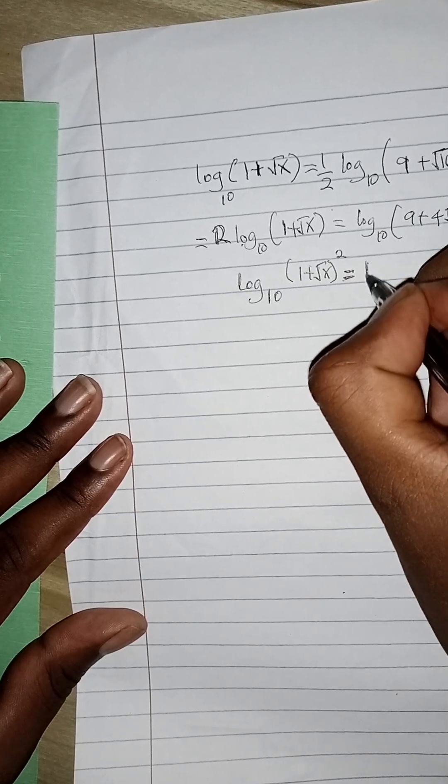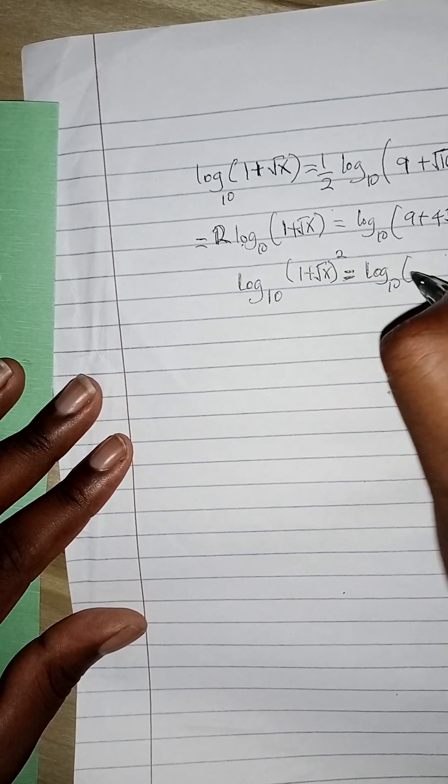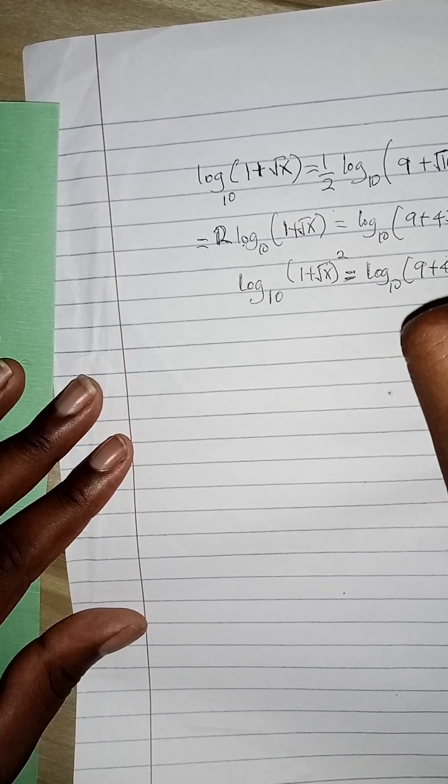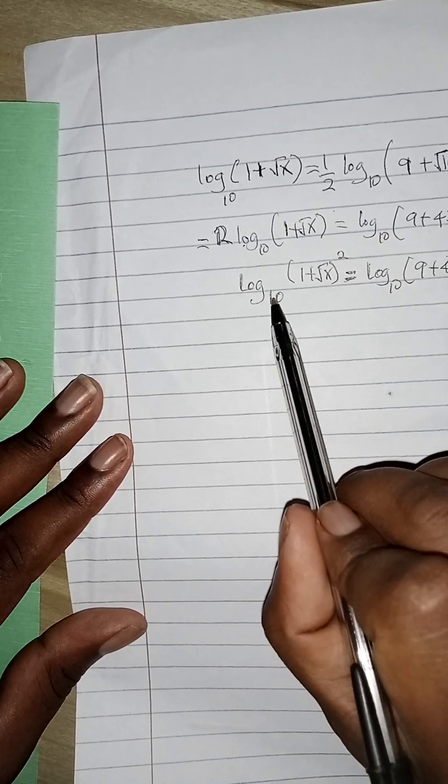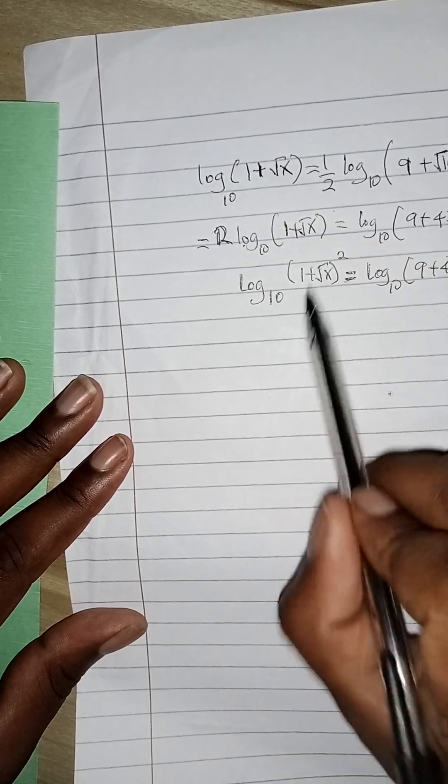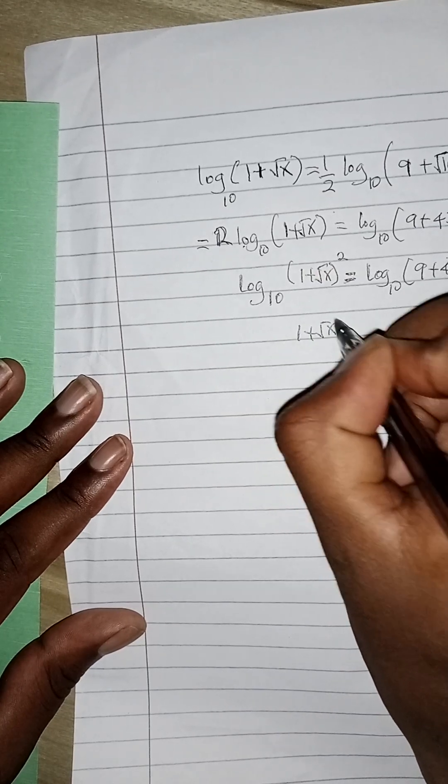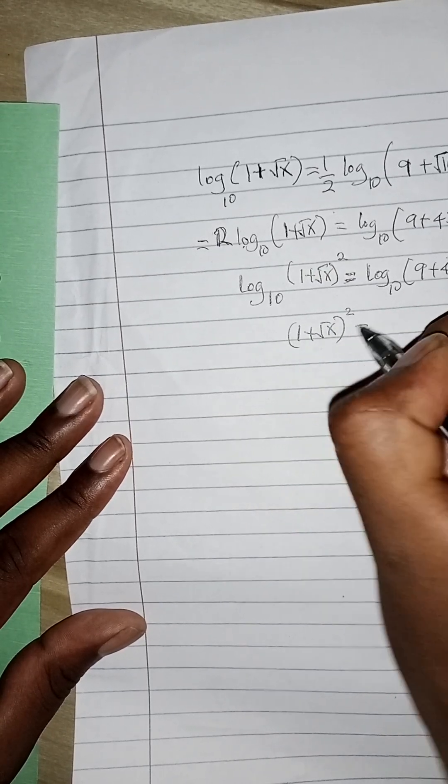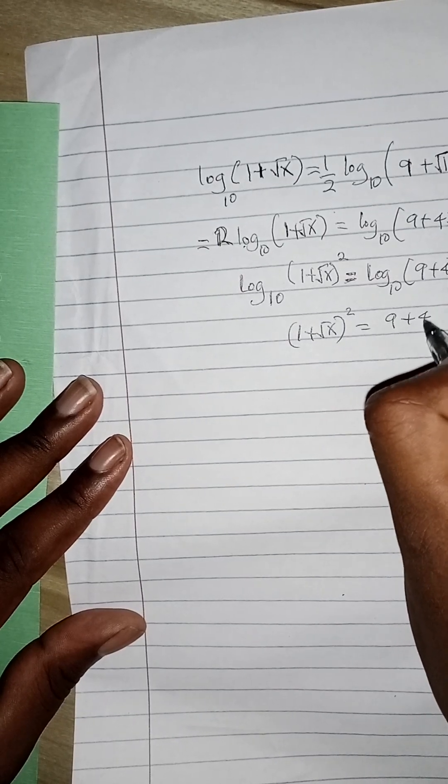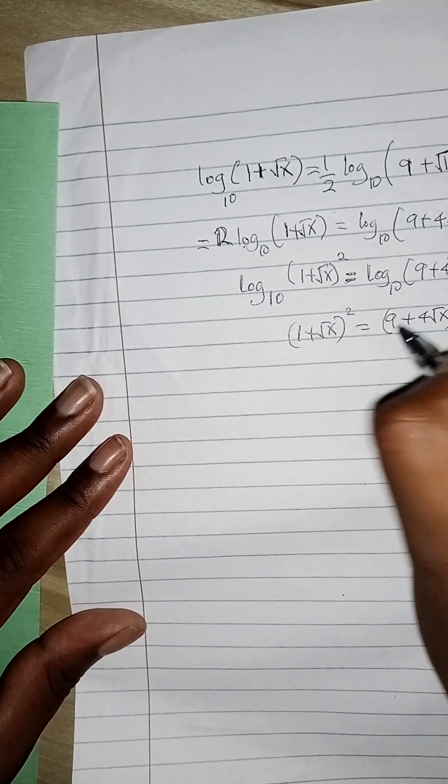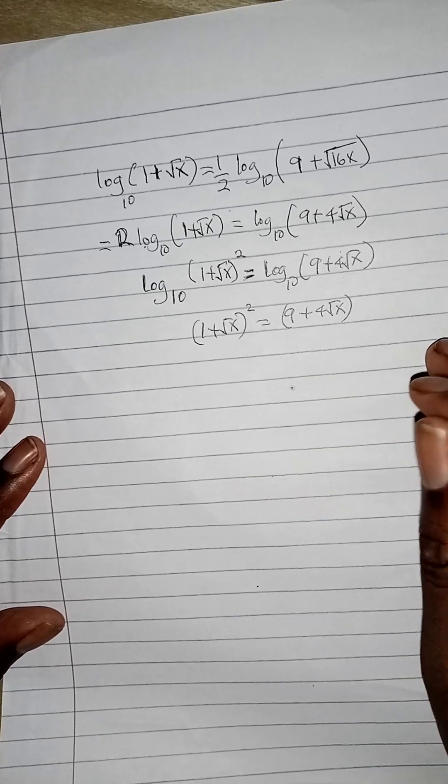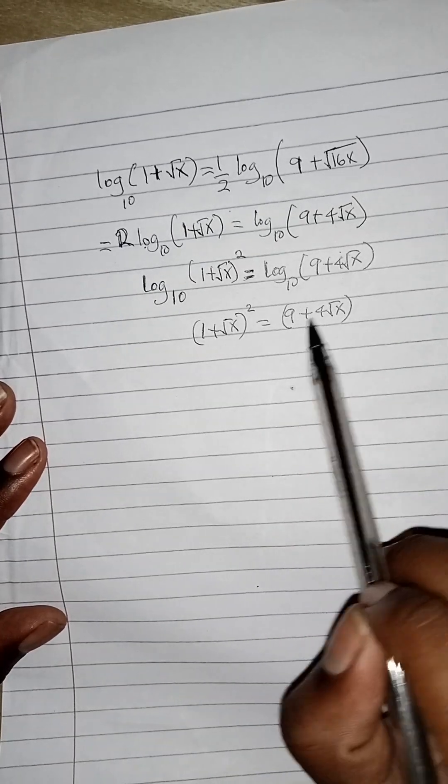Is equals to log to base 10 (9 plus 4 root of x). Now since the bases are the same, we can now comfortably drop the bases and we get (1 plus root of x) squared equals to 9 plus 4 root of x.